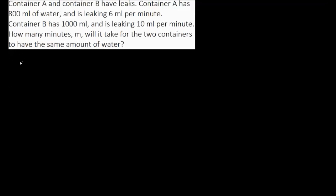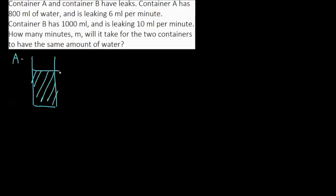Let's look at Container A. Container A has 800 mL of water. I will draw a container and it has 800 mL of water — let's say the water is reaching 800 mL. For every minute, it is leaking 6 mL. Let's say there is a hole, so the water is leaking 6 mL per minute. That's all for Container A.